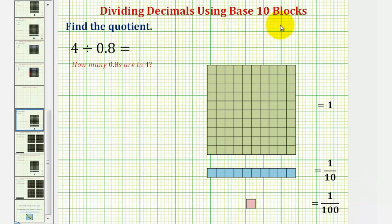We want to find the quotient using base ten blocks. We have four divided by eight-tenths, which means we want to determine how many eight-tenths there are in four.